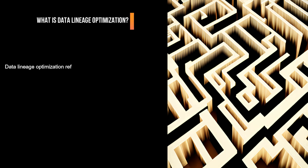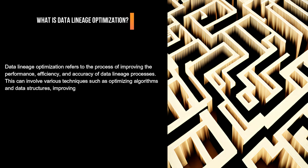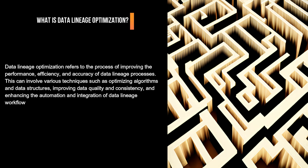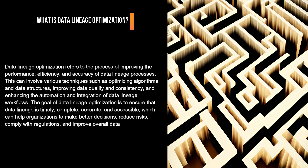What is Data Lineage Optimization? Data Lineage Optimization refers to the process of improving the performance, efficiency, and accuracy of data lineage processes. This can involve various techniques such as optimizing algorithms and data structures, improving data quality and consistency, and enhancing the automation and integration of data lineage workflows. The goal of data lineage optimization is to ensure that data lineage is timely, complete, accurate, and accessible, which can help organizations to make better decisions, reduce risks, comply with regulations, and improve overall data governance.